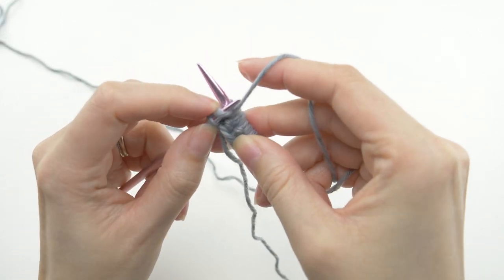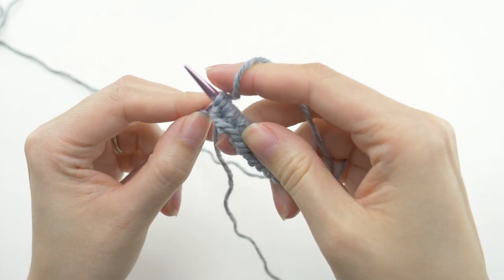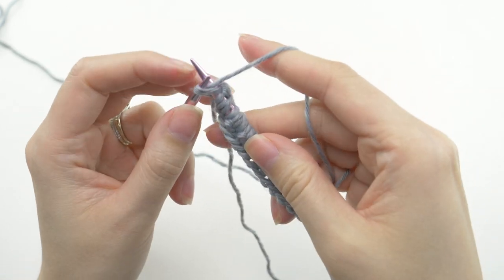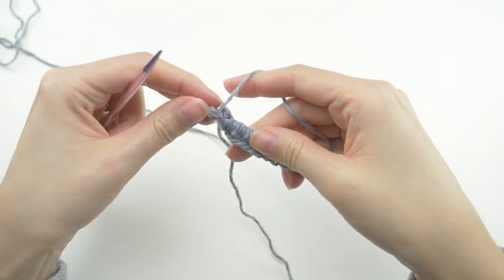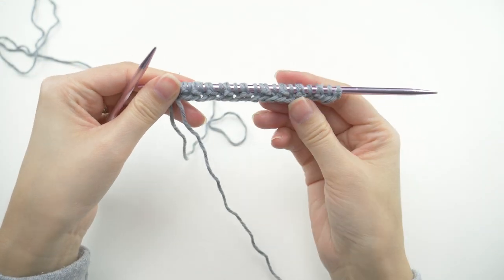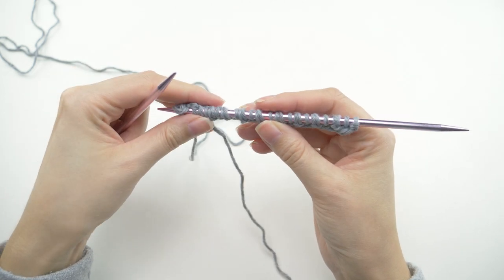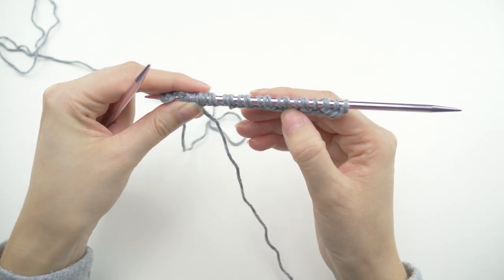Alright, this time your second to last stitch will be a BRK. Just work it like normal, and knit the last stitch. So when you're working with the brioche stitch, you'll have alternating stitches on the needle. That's a good way to visually check that you're on the right track.